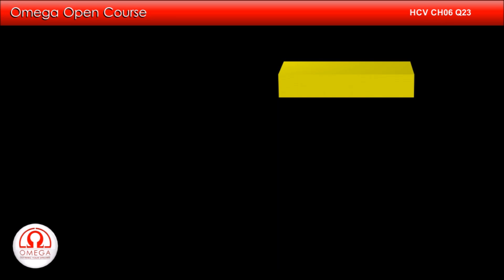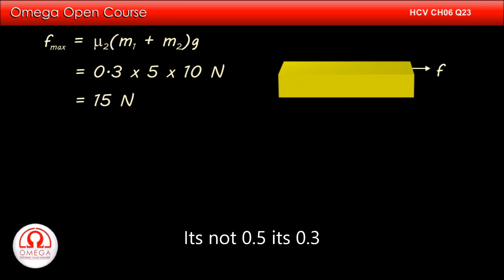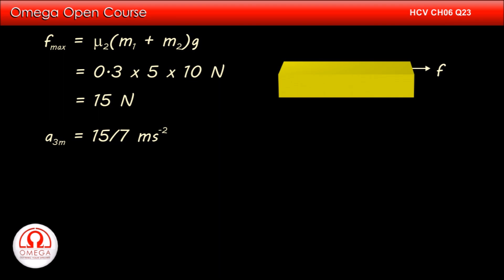The only horizontal force acting on M3 is friction between M2 and M3. The normal at this contact is equal to the weight of M1 and M2 combined, so the magnitude of the normal at this surface is (M1 + M2)g. Therefore, the maximum possible horizontal force on M3 is mu2 × (M1 + M2) × g, that is 0.5 × 5 × 10, or 15N. Thus, the maximum possible acceleration of M3 is 15 by 7 meters per second square. Since this is more than the acceleration of the M2-M3 system, both blocks move together with acceleration 0.4 meters per second square.